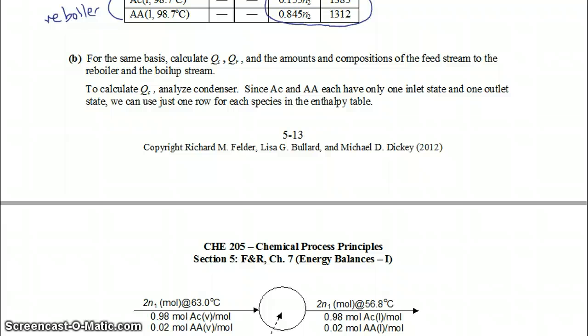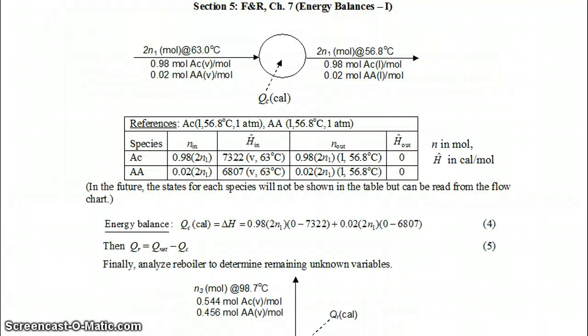In the next part of the problem, we calculate QC and QR individually. Now that we have Q_net, all we have to do is calculate QC and then find QR by the difference. We start by analyzing the condenser. By inspection, the material balance for the condenser is completely closed: 2N1 moles go in and 2N1 moles come out with the same compositions. So the only remaining step is to write the energy balance, which again reduces to Q equals ΔH.